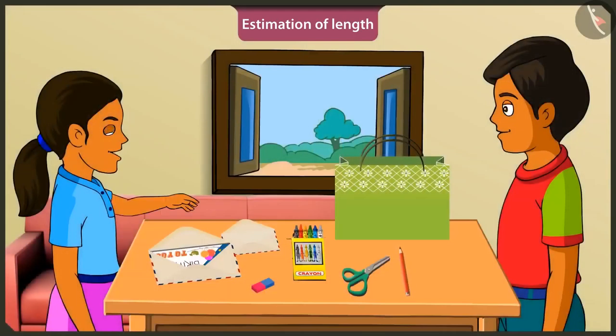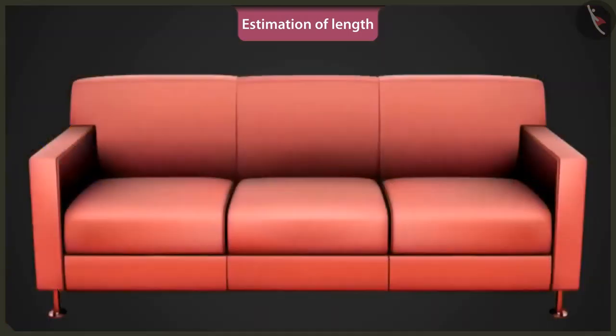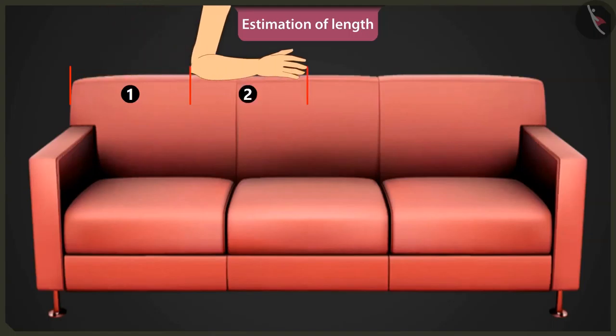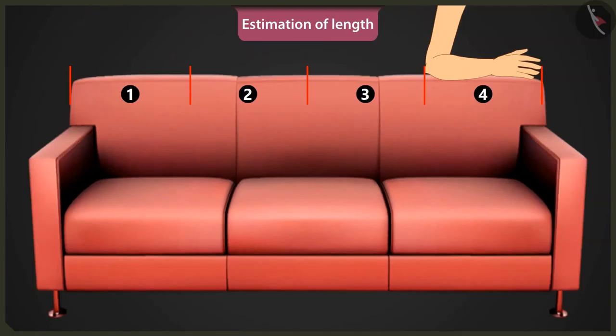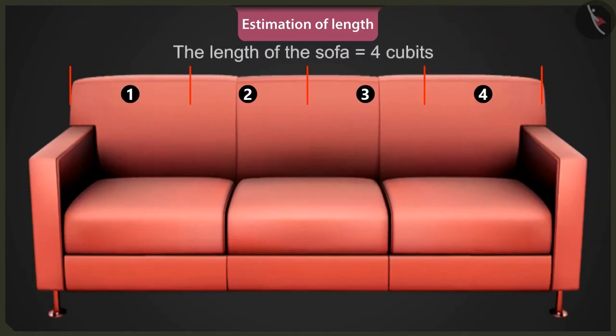Can we use it to measure this sofa? Yes. Look, this is one arm's length. This is two arms, three arms, this is four arm's length. So, the length of this sofa is equal to four cubits.